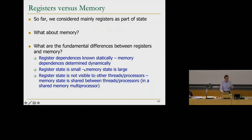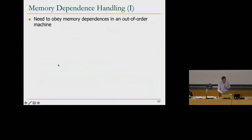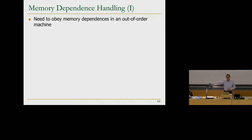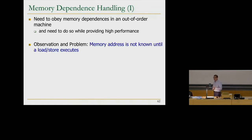The first two problems are going to cause headaches with out-of-order execution. In an out-of-order machine, you need to obey memory dependencies correctly — it's not just about registers. A load may be dependent on a store, and you need to ensure that the load gets the correct value from the correct store. We handle this nicely with register renaming, but these are not registers — these are memory addresses. Register addresses are known at the beginning of the pipeline, so we can rename to another namespace. Memory addresses we don't know until we execute the instruction, and we need to do so while providing high performance.